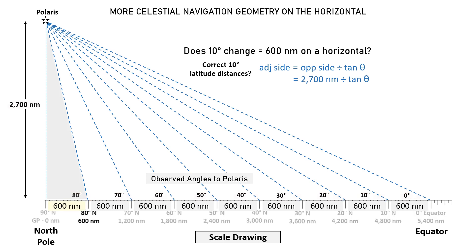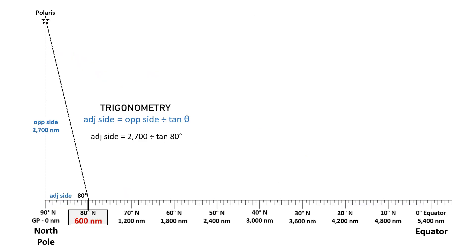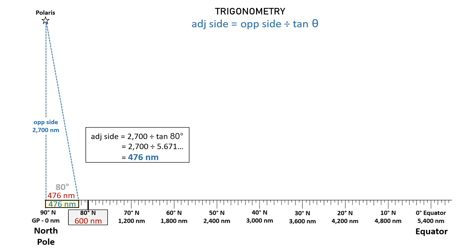And let's start with 80 degrees latitude north. Now the distance is 600 nautical miles, but when we do the calculation we only get 476 nautical miles, or 124 miles short.